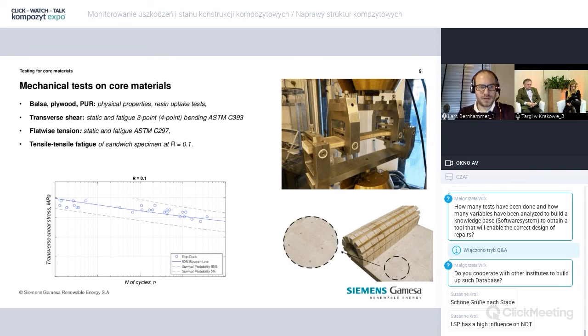For the core material, it's a slightly different test setup where we normally test in laminates the laminate properties. We test in bending setups to determine the stiffness, mainly the shear stiffness of the core materials, which are predominantly used in the shell design of our blades.